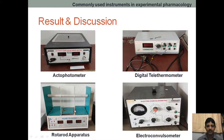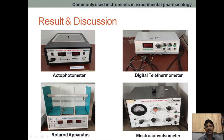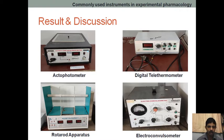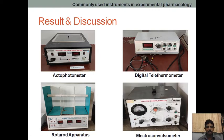Coming to the rota-rod experiment, we keep the animal on the rotating shaft. We can control the speed — generally it is set to 20 RPM, that means 20 rotations per minute. We keep the mice on it and the mice adjust itself. As soon as it falls down onto the plates, the count stops. We check how many seconds the animal remains on the rotating shaft.